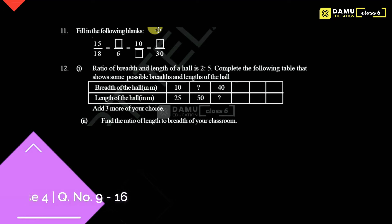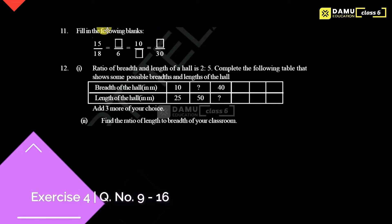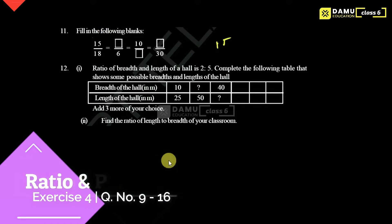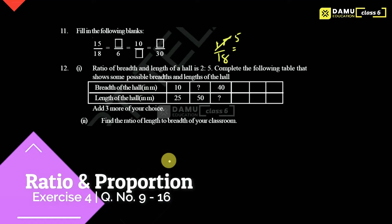In this module we are going to discuss what is the solution for the 11th question: fill in the following blanks. They are given 15 by 18, so you can divide with 3. 5 threes are 15, 3 sixes are 18, giving 5 by 6, that is 5 is to 6. So we are getting here 5 by 6.